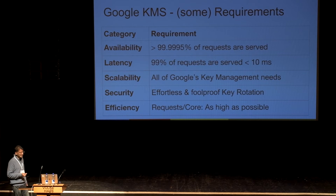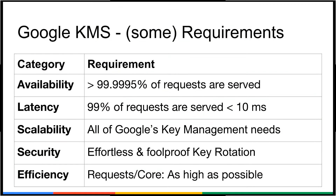These are some of the other requirements that impacted our design. On availability, the number we were asked to meet was five and a half nines of the percentage of requests served. This is not based on time directly — it's measured in hourly intervals. So if you serve a million requests, we're allowed to serve five errors in that interval. We serve way more than that.